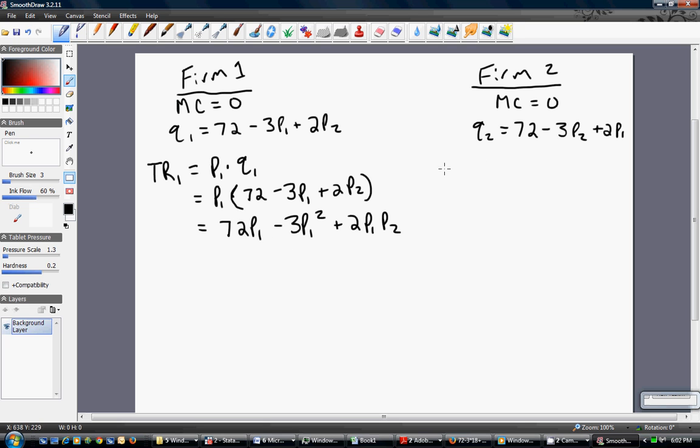We can do the same thing for firm two. Firm two's total revenue is firm two's price times firm two's output. And this will equal the following. Notice that these equations are mirror images of one another.